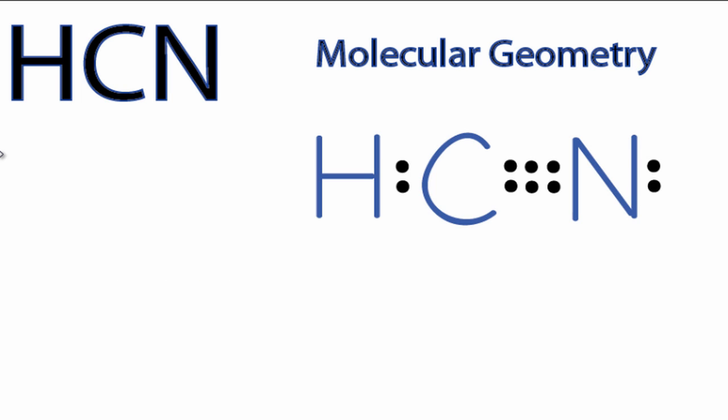So we would imagine if those valence shell electron pairs are repelling each other, we'd have hydrogen on one side and nitrogen on the other, and that would look like this.